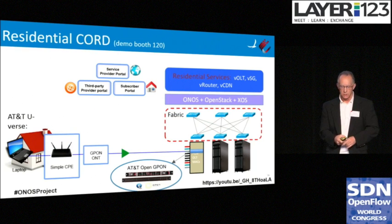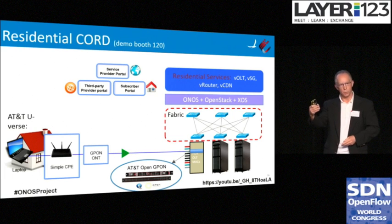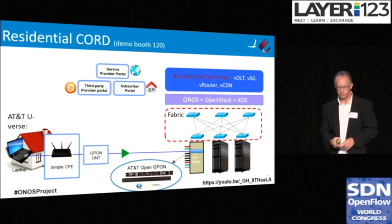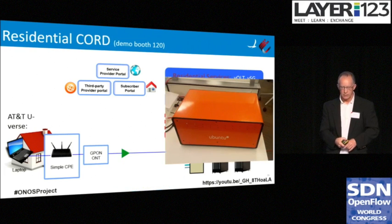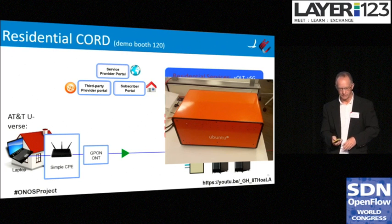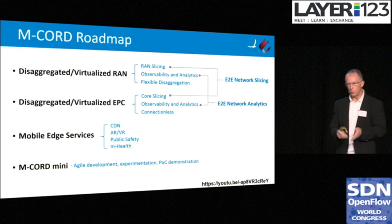Residential CORD is where CORD started — our first proof case with a simple CPE connecting through GPON to a device created by Celestica and designed by AT&T. We show the different service portals so you can see what a customer gets, how AT&T accesses their capabilities, and how services are added by other vendors like Akamai. The same demonstration is running downstairs — it's running on a data center in a box from Canonical, an orange box. Please stop by and take a look at the demonstration. If CORD exploded in the last year, mobile CORD is going to double-explode.